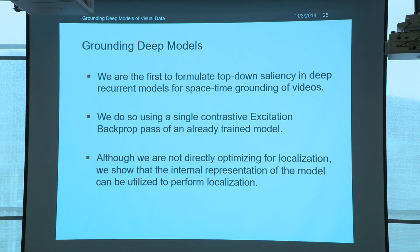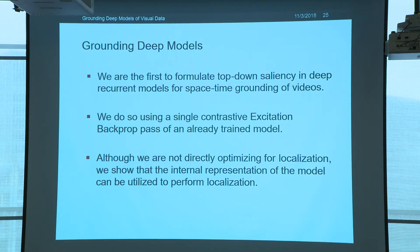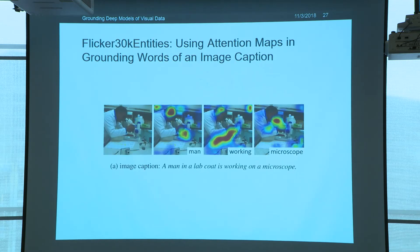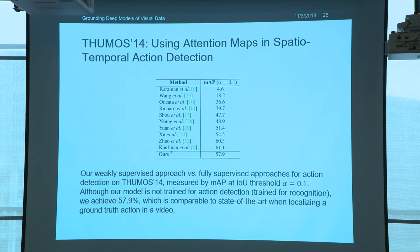We were first to formulate top-down saliency in deep recurrent models for space-time grounding of videos. These videos are a result of only a single contrastive partial backpropagation using excitation backprop. What we found interesting is that although we're not directly optimizing for localization, we are getting some coarse localization for free. All the models shown were trained for classification only — we never supervise by saying where cliff diving starts and ends. However, when we compare our performance to supervised methods we obtain quite similar results, though only at coarse localization with an overlap alpha of only 0.1.